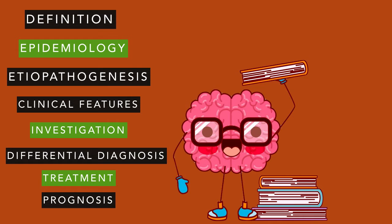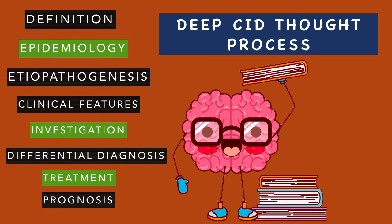To remember this, I have a small mnemonic: 'Deep CID Thought Process.' D for definition, E for epidemiology, EP for etiopathogenesis, C for clinical features, I for investigation, D for differential diagnosis, 'Thought' for treatment, and 'Process' for prognosis.